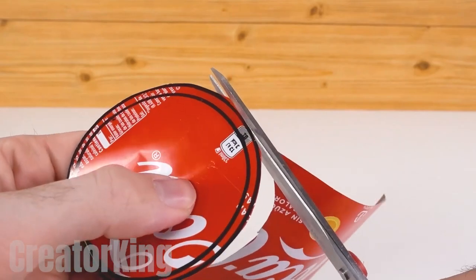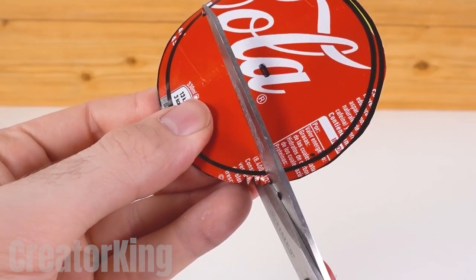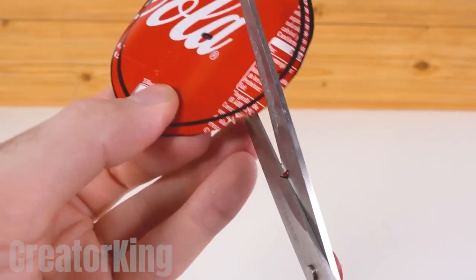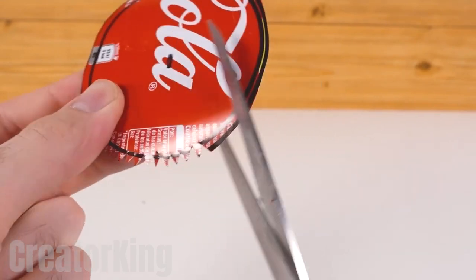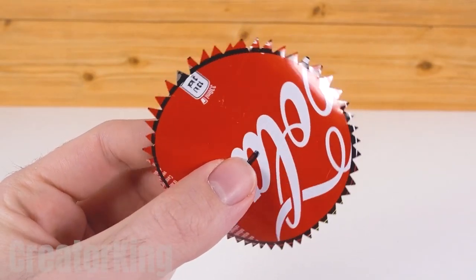With the scissors, cut the sheet along the line of the larger circle. Now let's do some dental work along the edge without going beyond the second mark to create the little teeth of our future saw.